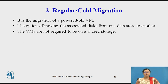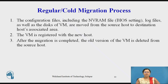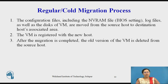The second type of virtual machine migration is regular or cold migration — it is migration of powered-off virtual machines. You have the option of moving the associated disk from one data store to another. The virtual machines are not required to be on shared storage. The configuration files including the NVRAM file, log files, as well as the disk of the virtual machine are moved from the source host to the destination host. Then the virtual machine is registered with the new host, and after migration is completed, the old version of the virtual machine is deleted from the source host.